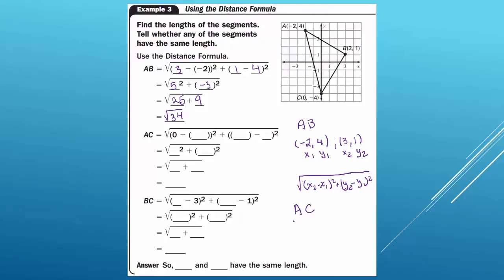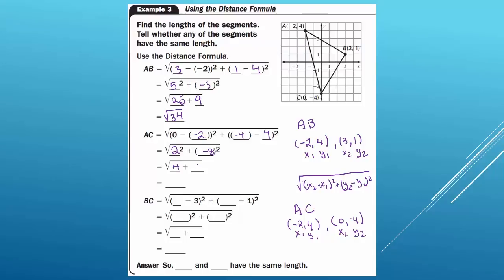For segment AC: A is at (−2, 4) and C is at (0, −4), so x1=−2, y1=4, x2=0, y2=−4. AC equals the square root of (0 minus −2) squared plus (−4 minus 4) squared. That's the square root of 2 squared plus (−8) squared, which is the square root of 4 plus 64, giving us the square root of 68. Since 68 is not a perfect square we leave it as the square root of 68.